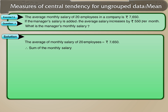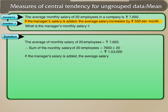The sum of the monthly salary of 20 employees is Rs. 7,650 times 20, which equals Rs. 1,53,000. If the manager's salary is added, the average salary increases by Rs. 550. Therefore, the new average is Rs. 7,650 plus Rs. 550, which equals Rs. 8,200.